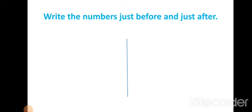Write the numbers just before and just after. Students, here the given number is 341. We have to write the just before number of 341. The number that comes is 340. So 340 is the before number of 341. Now we have to write the after number of 341, which is 342. So 342 is the after number of 341.